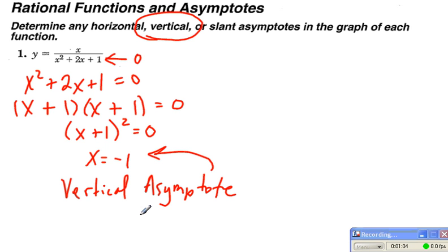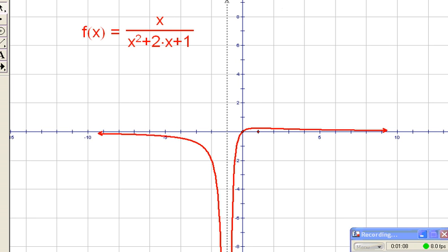So when I check my graph, sure enough, I have a vertical asymptote here at x equals negative 1. You can see as we scroll down the graph that the curve is approaching from the positive and from the negative direction, approaching that asymptote, but doesn't cross it.